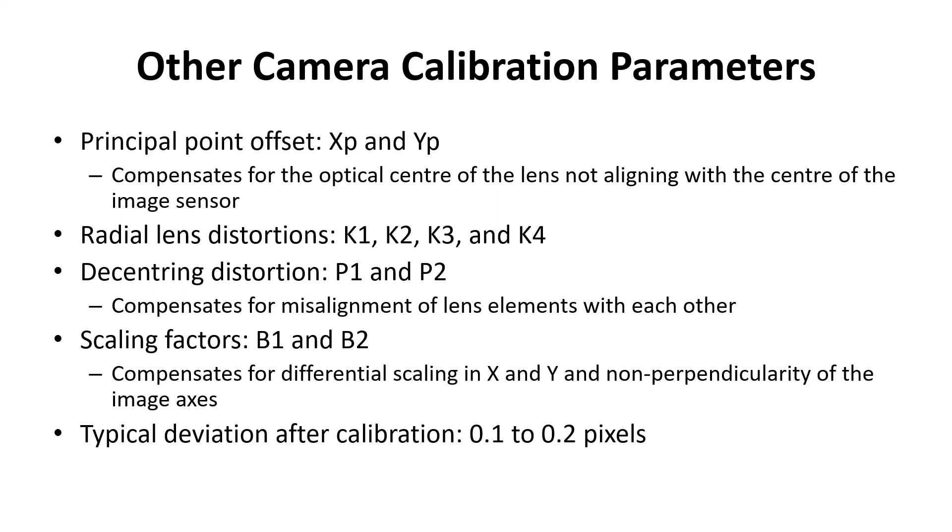If you correct for all of these parameters, the typical deviation after calibration is about 0.1 to 0.2 pixels. For a good quality lens, the deviation before calibration was probably 0.3 to 0.6 pixels or even larger. So while it may not sound like a big change, the software can make those corrections and you end up getting a more accurate model after implementing the proper camera calibration.